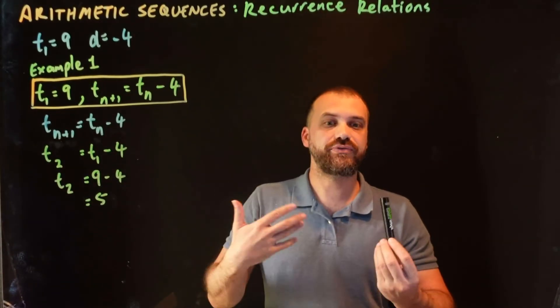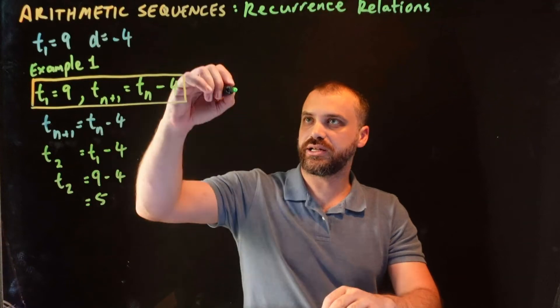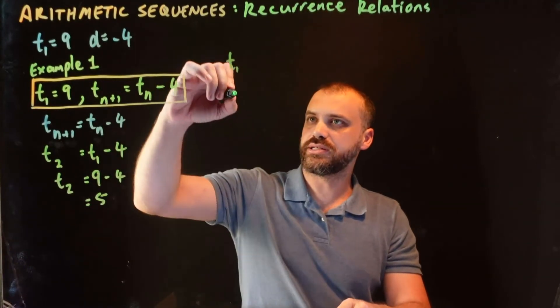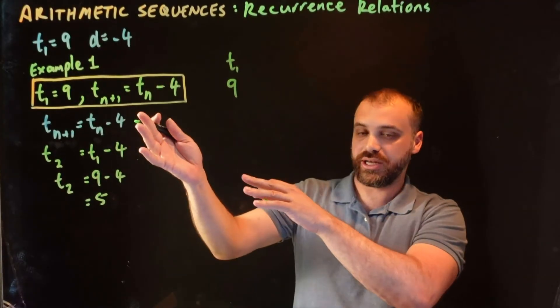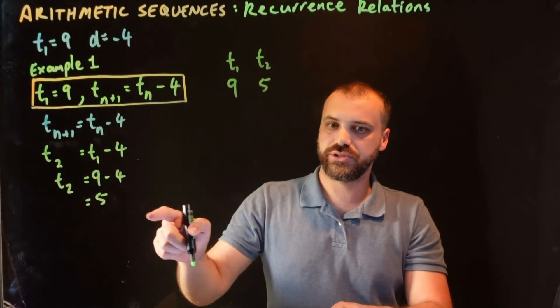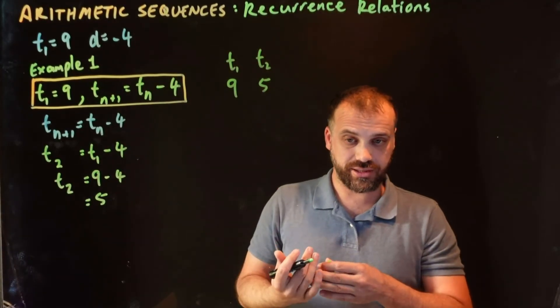Okay, great. What have I figured out? I figured out that term 1, t_1, is equal to 9. I was told that at the start. I also know that term 2 is equal to 5 now. I've just calculated that. Let's do another calculation.